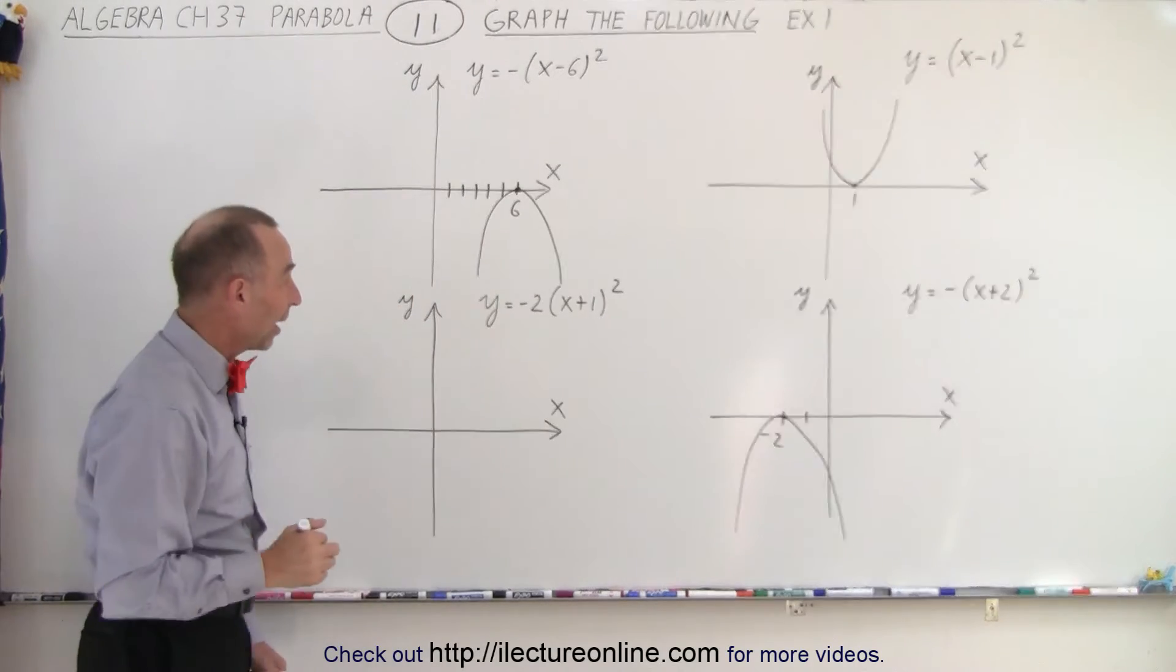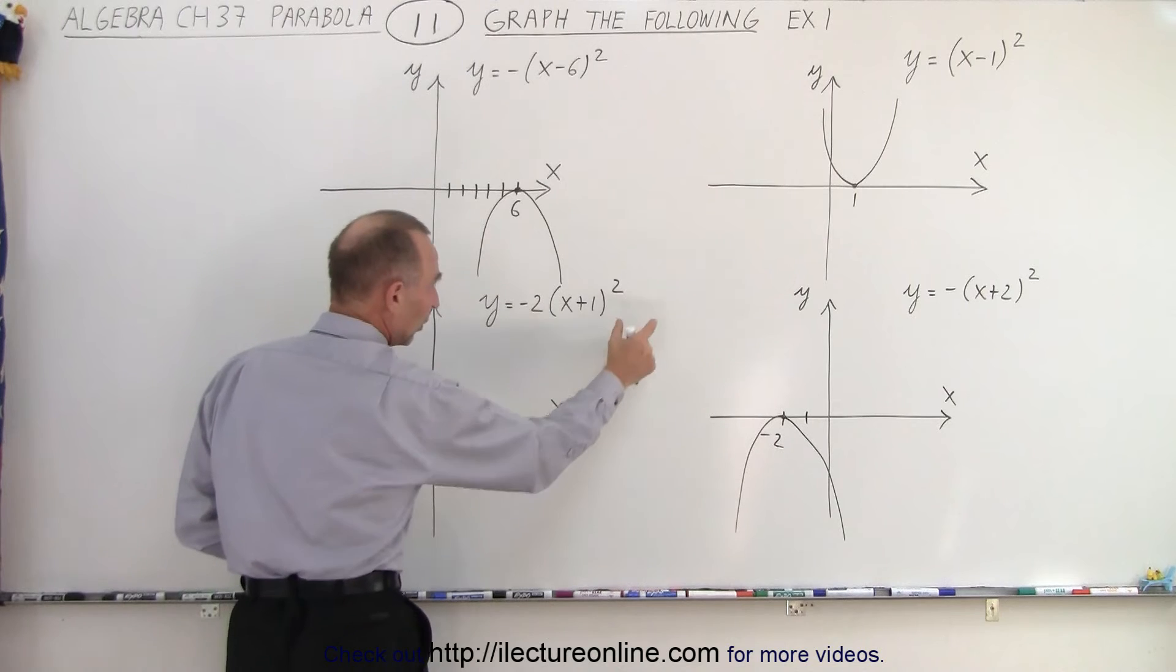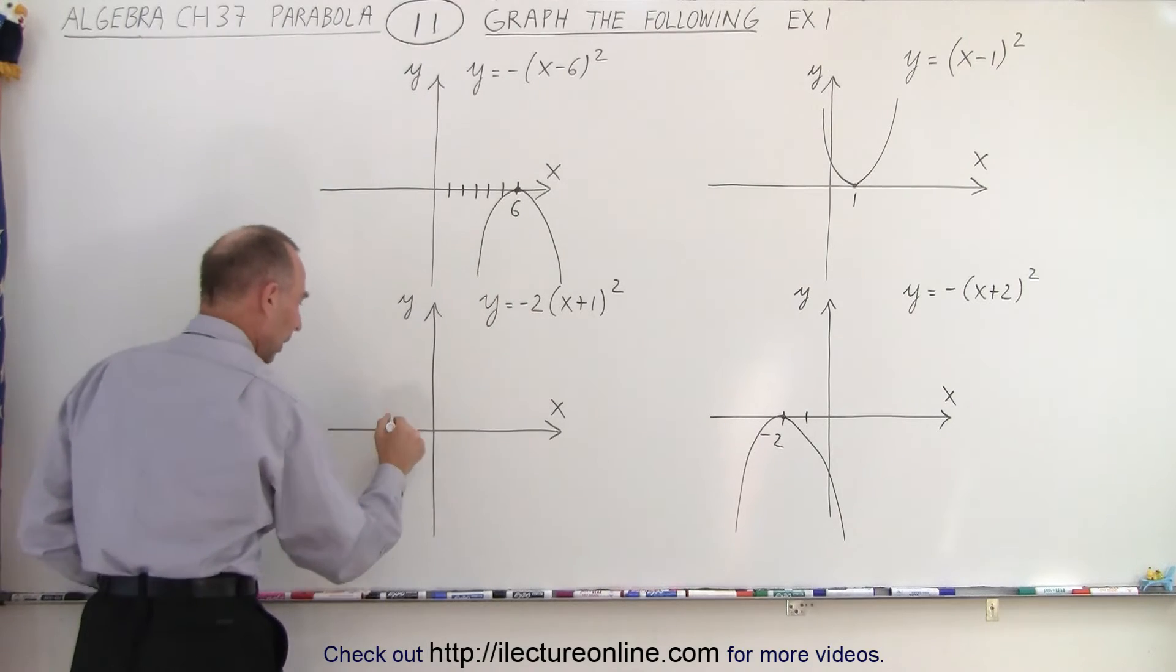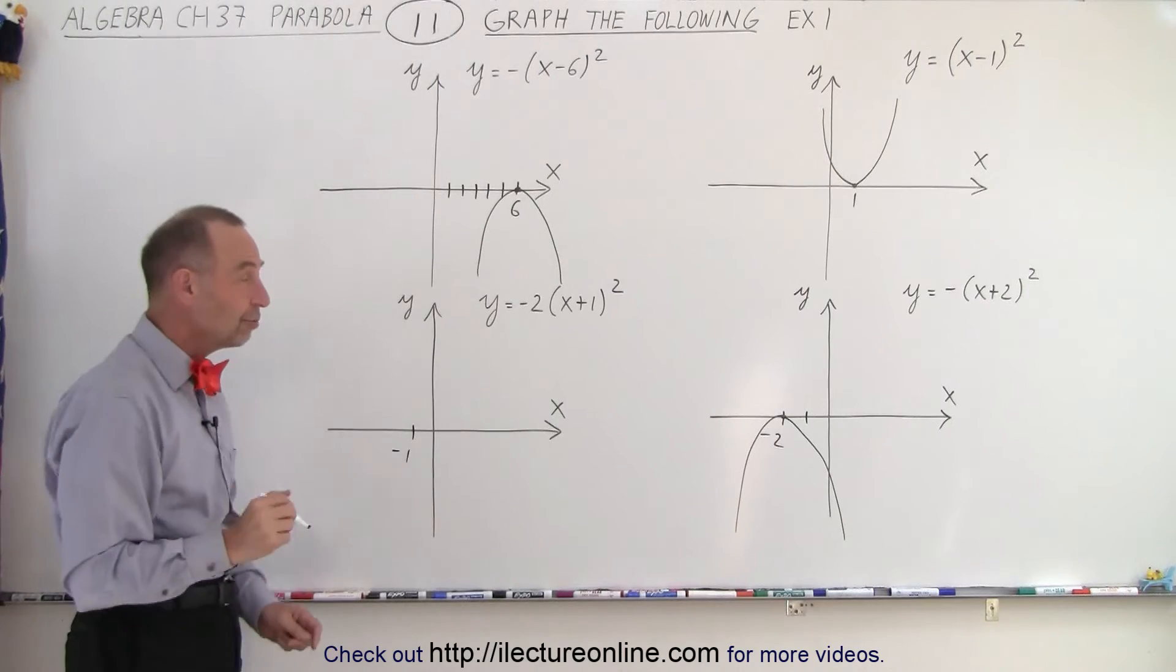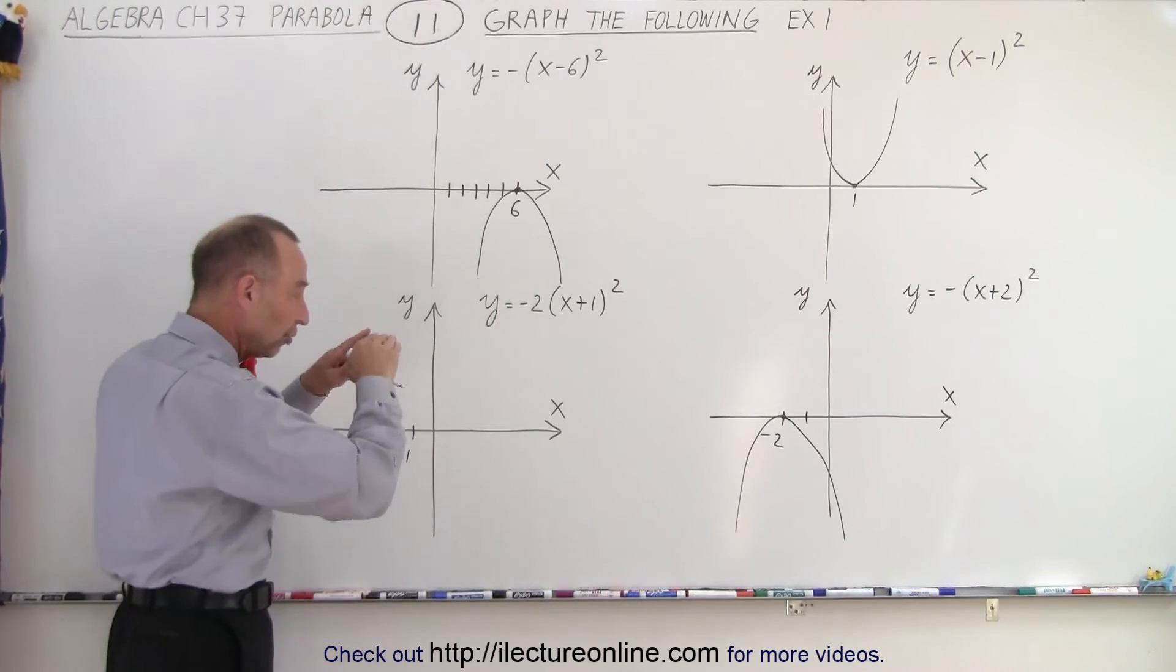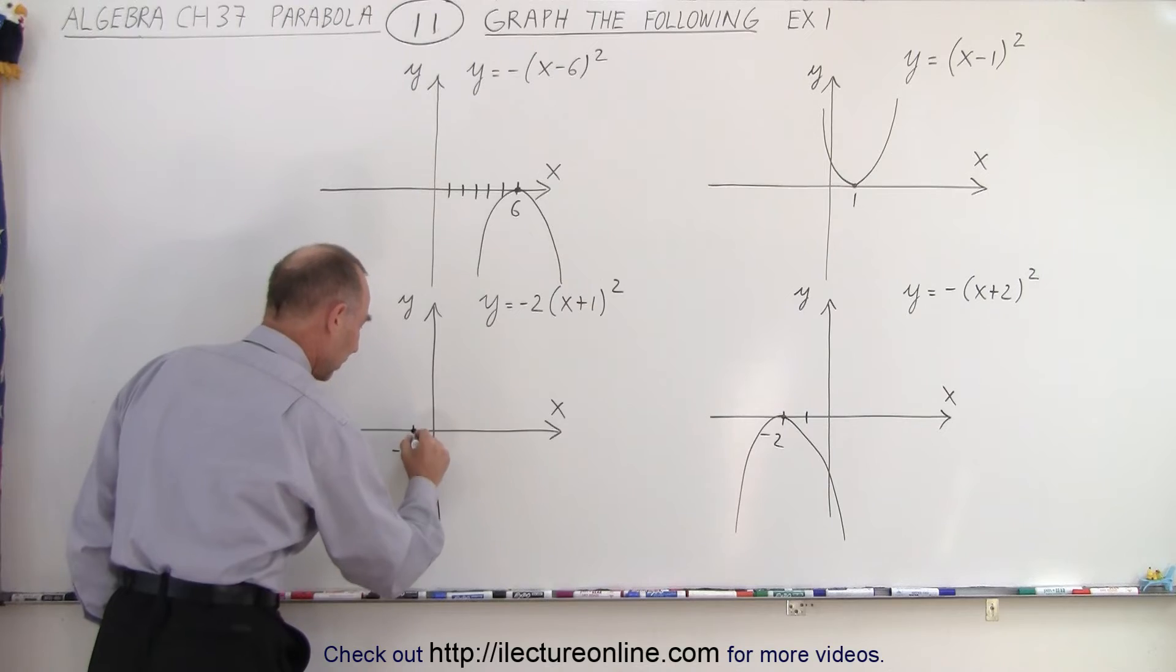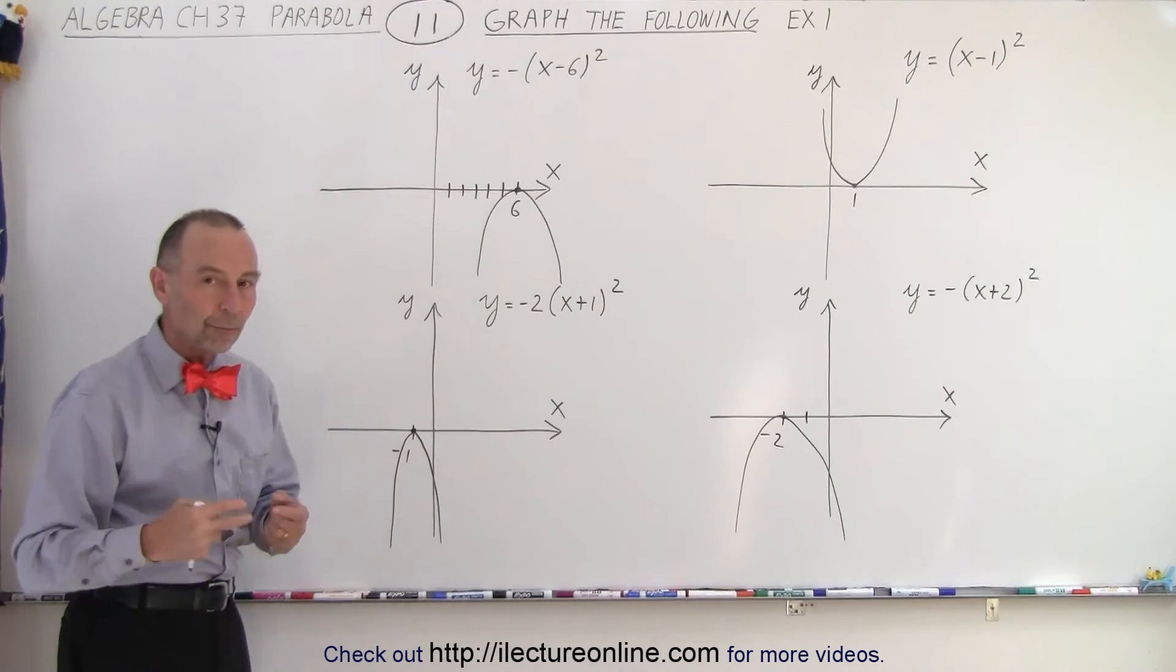Finally, notice we have a negative in front, which means it opens downward. We don't have a constant, so it's not shifted up or down. We have a plus 1 here, that means it's shifted to the left by 1. But we also have a 2 in front, which means the value for y will grow twice as fast, so the parabola will be skinnier. The vertex will be on the x-axis, but now we have a very skinny parabola because y will grow in magnitude much faster.